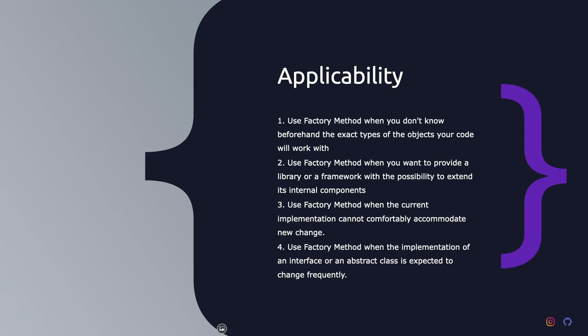The structure and implementation of the factory method design pattern can be summed up in four points. First, create the interface common to all objects that can be produced by the creator and its subclasses. Second, create concrete implementations of that interface. Third, the creator class declares the factory method that has the return type of the interface. Fourth, concrete creators overwrite the base factory method so it returns a different type of object based on the concrete implementation.